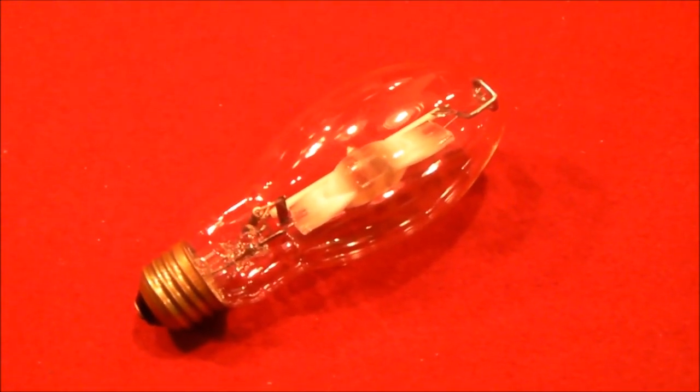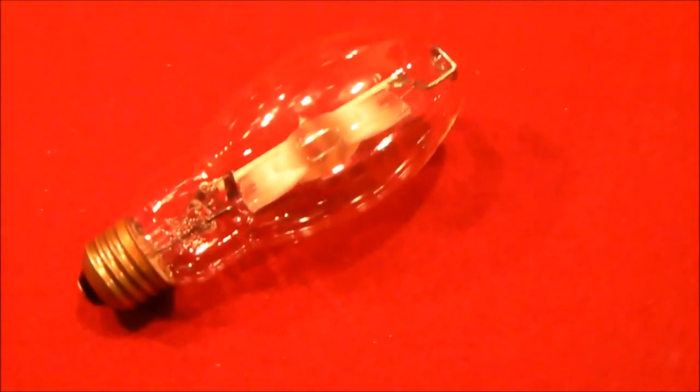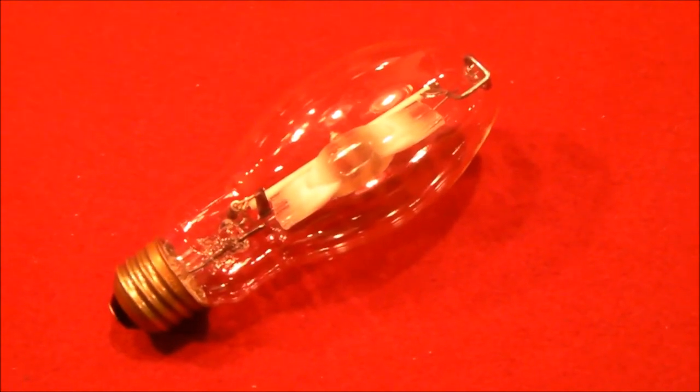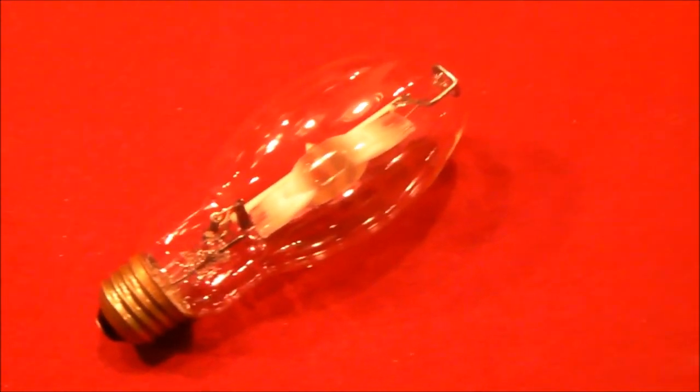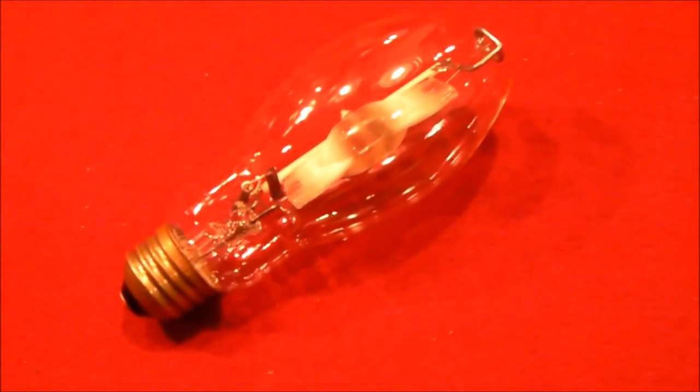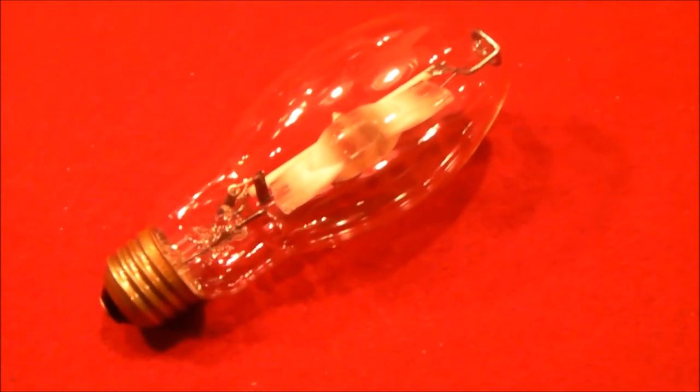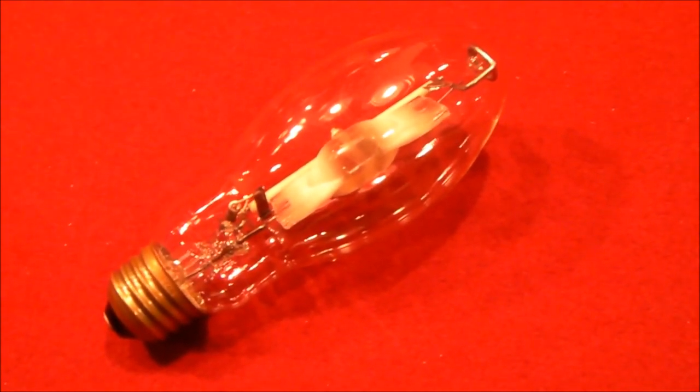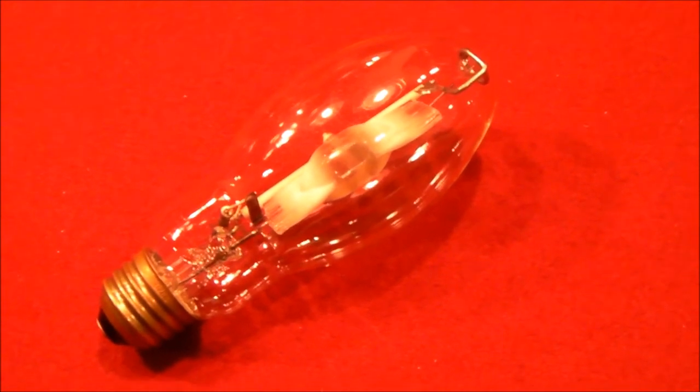Hello everybody. I have this 175-watt metal halide outdoor light fixture. It only has three components in it: a light bulb, a capacitor, and a ballast or transformer.